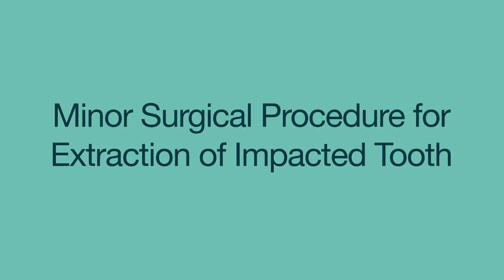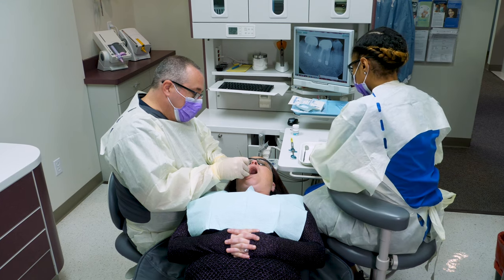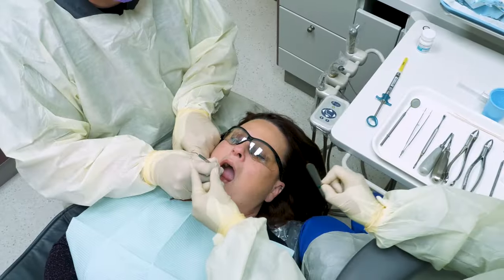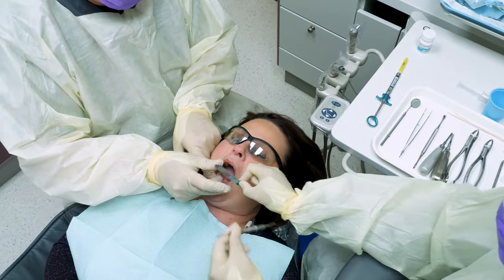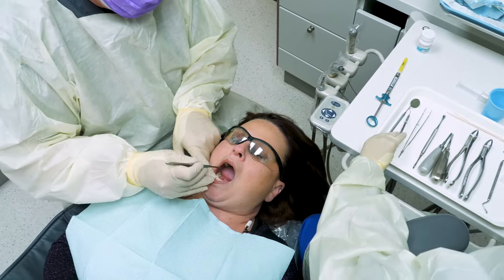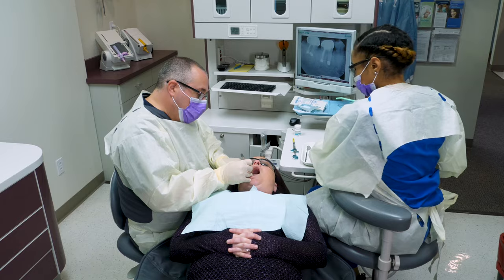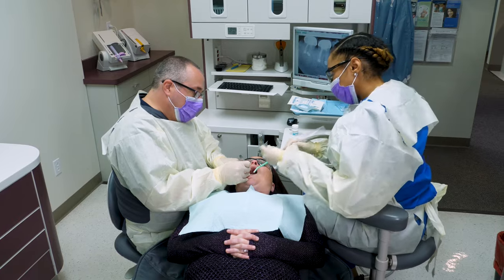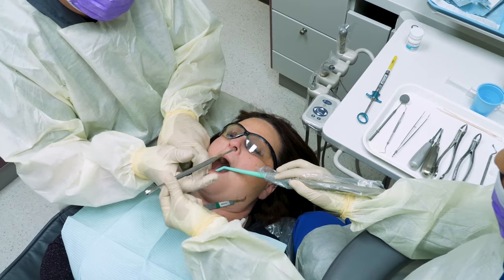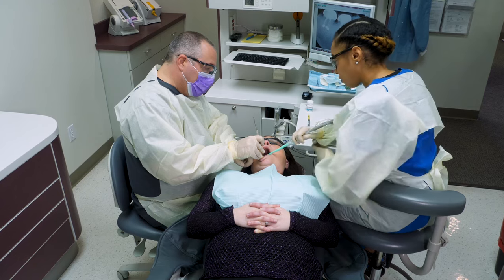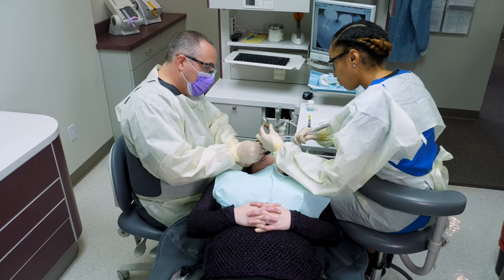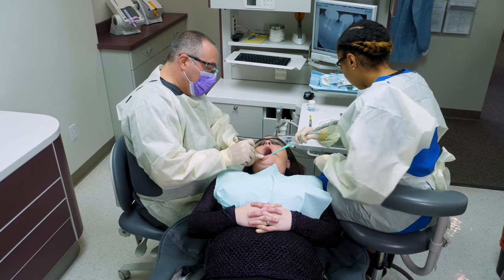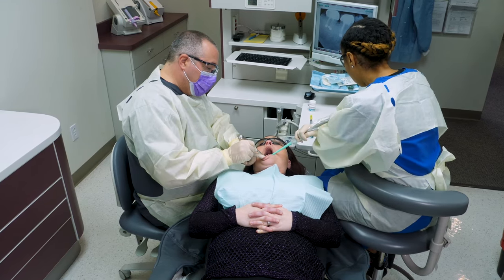The procedural steps to assist with the extraction of an impacted tooth include: ensure the patient is properly anesthetized and comfortable, pass the surgical scalpel to the dentist and suction as needed, retrieve the scalpel and hand the dentist the periosteal elevator, retract the cheek and/or tongue, and rinse and suction as needed.